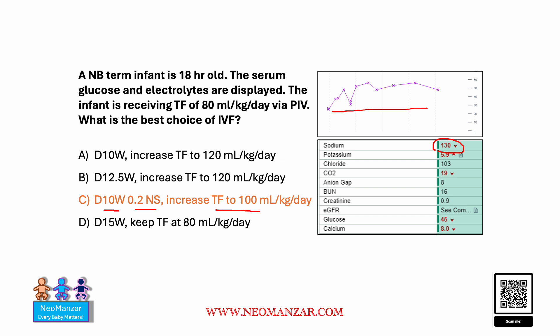The first choice has no salt, so that is not the right answer — we have to treat the hyponatremia. The second one, same way, we don't have salt, although they have corrected here with more glucose, but we need salt. And the third one, they have further increased it, but again they are decreasing it to 80 and they don't have salt added.